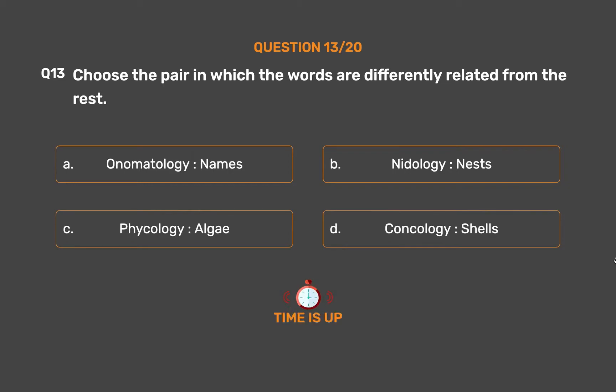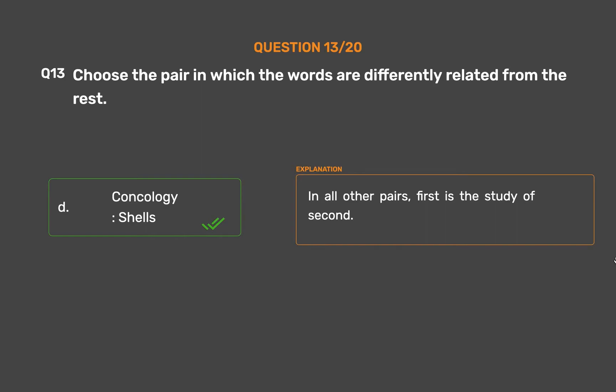The correct answer is Option D: Conchology, Shells. In all other pairs, the first is the study of the second.